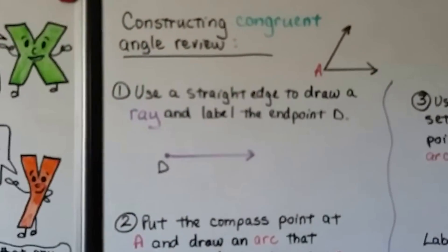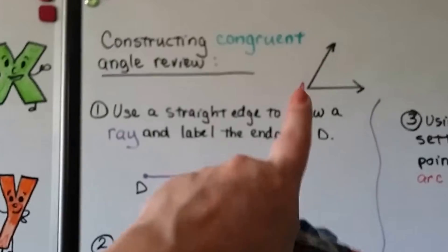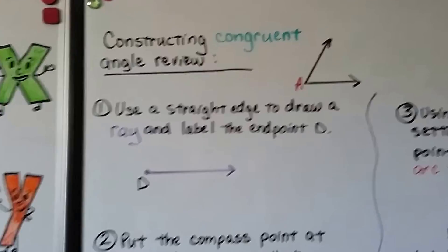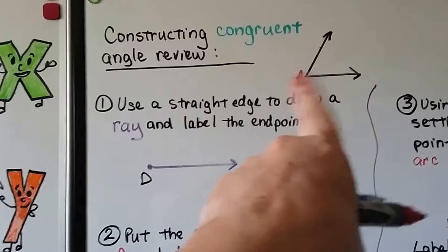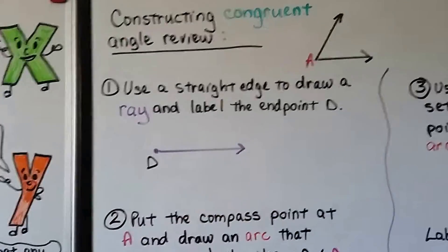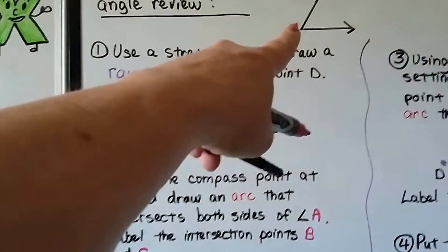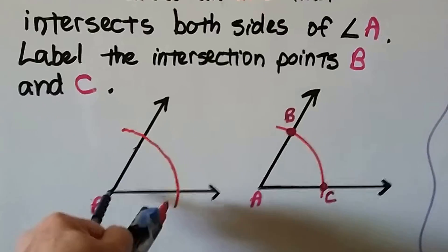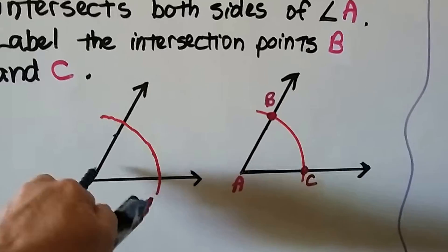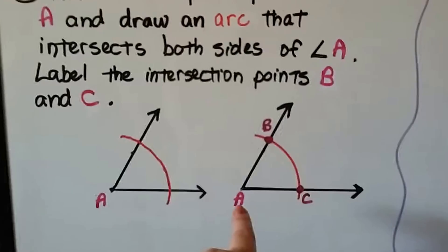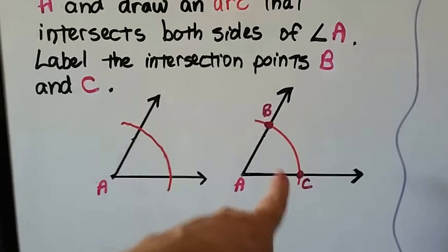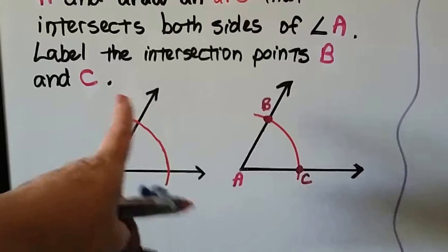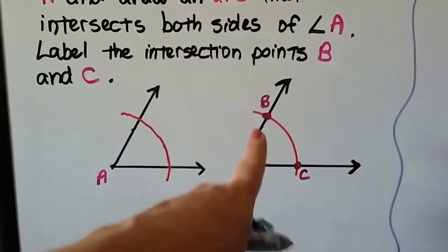Let's do a quick review of constructing congruent angles. Here we have angle A — that's the one we're going to copy. Use a straight edge to draw a ray and label the endpoint D. That will be the base of our copy. Put the compass point at vertex A and draw an arc that intersects both sides of angle A. Label those intersections B and C.